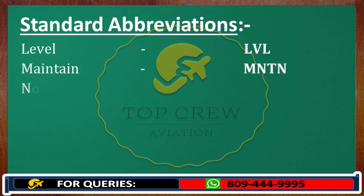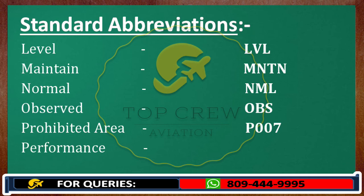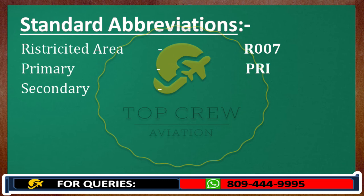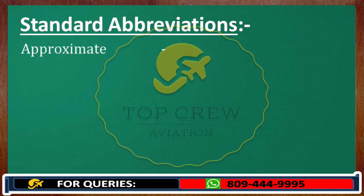Normal — NML. Observed — OBS. Prohibited Area — P (e.g., P007). Performance — PER. Restricted Area — R (e.g., R007). Primary — PRI. Secondary — SRY. Standard — STD. Unable — UNA. Crossing — XNG. Approximate — APRX. Coordinate — COOR.